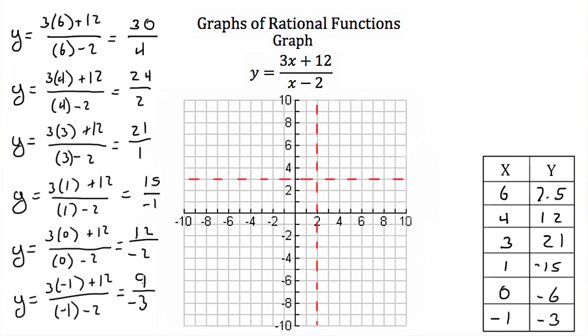So let's try plotting these points. We have 6 and 7.5, should be right there. 4 and 12, well that's off our graph, it would be about there. And 3 and 21, well that's way off our graph, so I can't plot that point. But I know that my graph is heading in that direction as it gets closer to the asymptote.